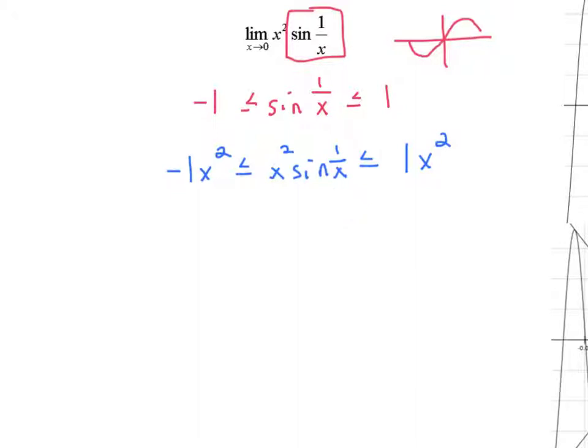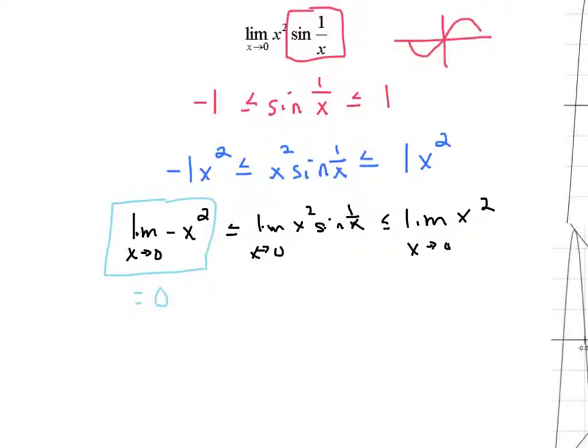Well, now we add the limit statement back in. The limit as x approaches 0 of negative x squared must be less than or equal to the limit as x approaches 0 of x squared sin 1 over x, must be less than or equal to the limit as x approaches 0 of x squared. Well, this limit right here is equal to 0 because it's just the parabola. This limit right here is equal to 0. So what I've just said here is that this limit in the middle is greater than or equal to 0, but less than or equal to 0. So this limit in the middle must also be 0.